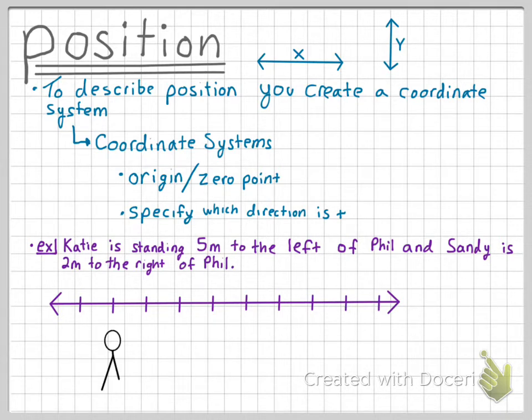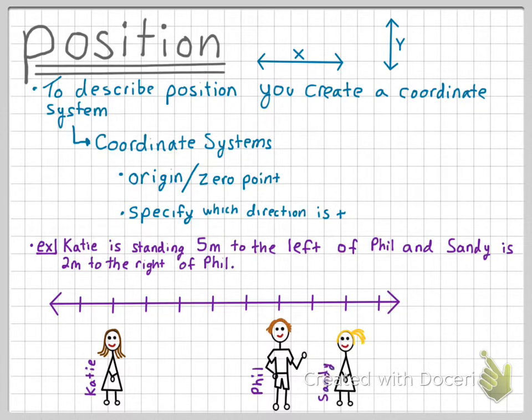Let's first draw in Katie at this point, and we know that Phil is standing 5 meters to her right, so we can draw in Phil at this point. Finally, Sandy is standing 2 meters to Phil's right. So this is where everybody is standing.